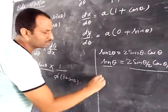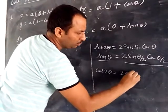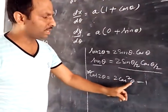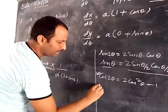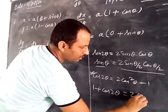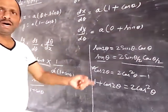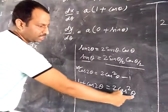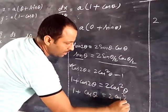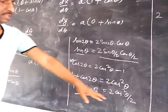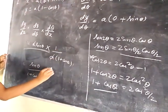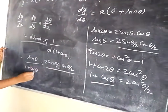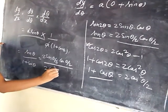Similarly, the formula for 1 plus cos 2theta is 2 cos squared theta. To make the half-angle formula, 1 plus cos theta, the angle is also halved, so it becomes 2 cos squared(theta by 2). So the numerator a·sin theta becomes 2 sin(theta by 2) cos(theta by 2), and the denominator 1 plus cos theta is 2 cos squared(theta by 2).